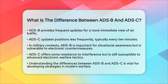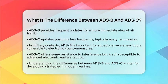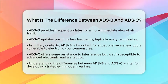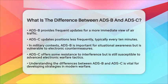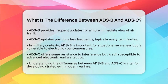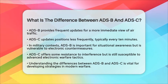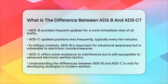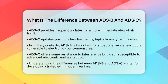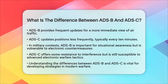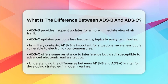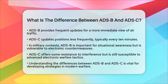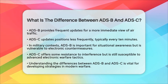In summary, while both Automatic Dependent Surveillance Broadcast and Automatic Dependent Surveillance Contract are used for tracking aircraft, they operate in distinct ways. ADS-B offers real-time updates and continuous broadcasting, while ADS-C relies on contracts and operates over longer distances. ADS-B has its advantages and vulnerabilities, especially in military applications.